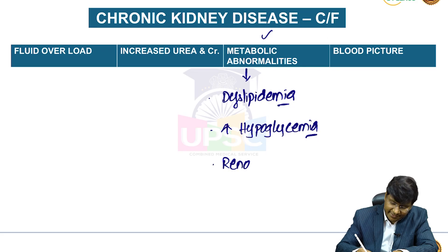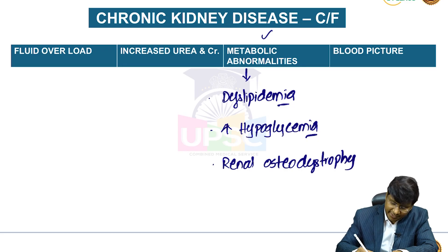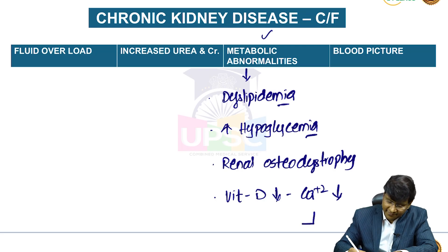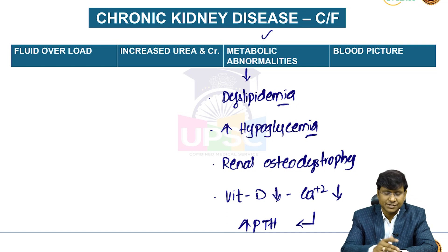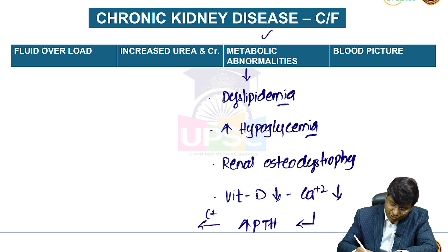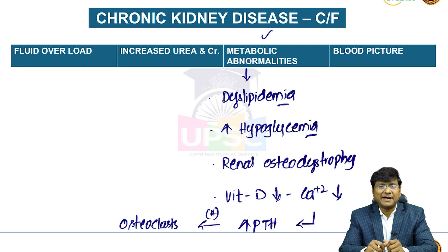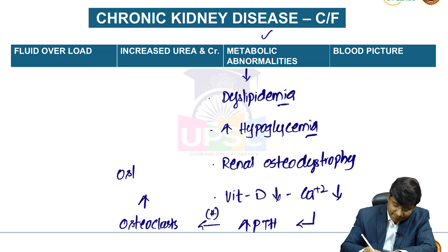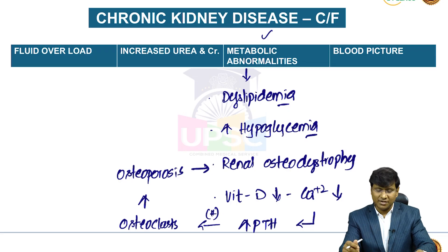Another important metabolic abnormality is renal osteodystrophy. In patients with chronic renal failure, there is vitamin D deficiency which causes hypocalcemia. Whenever there is hypocalcemia, there is increase in parathormone secretion. This increased parathormone stimulates the osteoclast, causing bone resorption resulting in osteoporosis. Because this is due to renal pathology, it is called renal osteodystrophy.